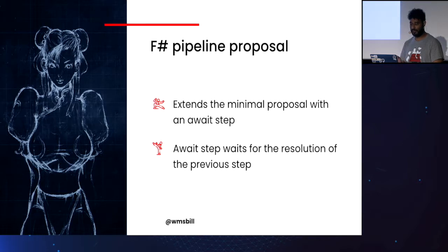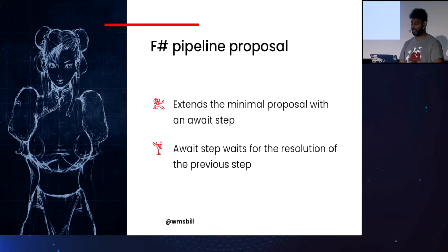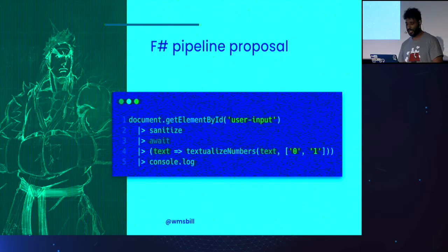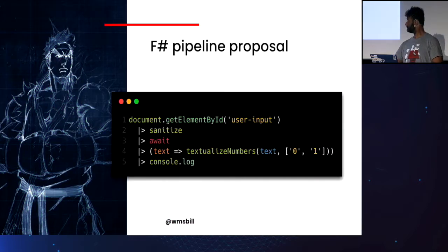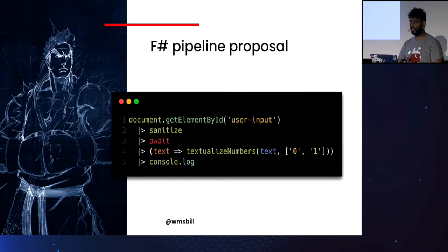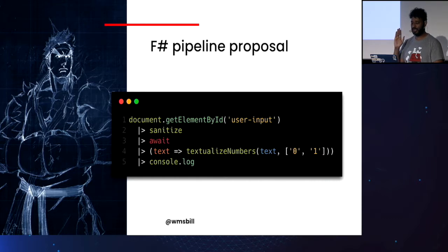As a counterpart, I'd like to present the F-sharp Pipeline proposal. It just extends the minimal proposal with an `await` step. The `await` step simply awaits the resolution of the previous step and then resolves it as input for the next step. Although it's simpler than Smart Pipeline, Smart Pipeline has extensive documentation about how to extend it after the minimum proposal lands. But F-sharp is simple — just create an `await` step and don't worry about the arrow function issue. This proposal is in stage 1.